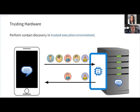Another solution actually employed by Signal in practice is to essentially outsource the trust of this contact discovery procedure to some trusted hardware. The server has a trusted execution environment, and using it you can let the user verify that the code inside is really only performing the contact discovery process and is not leaking any contacts outside the trusted execution environment. However, trusted execution environments have been the target of many attacks in recent years — for example Plundervolt and Foreshadow — which try to extract secrets out of these environments.